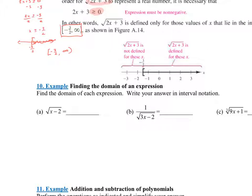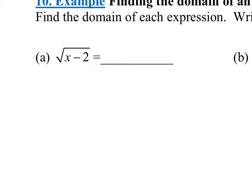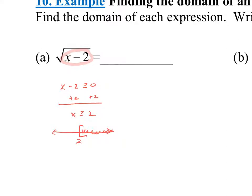Find the domain of each expression and write your answer in interval notation. Anytime you're taking a square root, whatever's underneath the radical needs to be greater than or equal to zero. So x - 2 ≥ 0. Adding 2 to both sides gives x ≥ 2. On the number line, plot 2, shade to the right, and use a bracket since we include that number. The answer is [2, ∞).